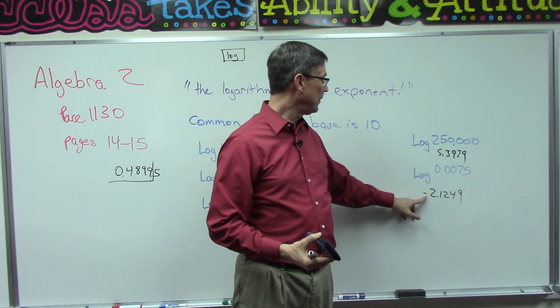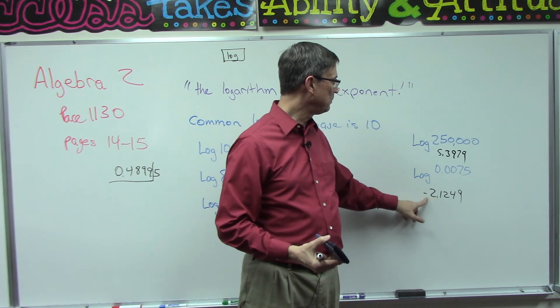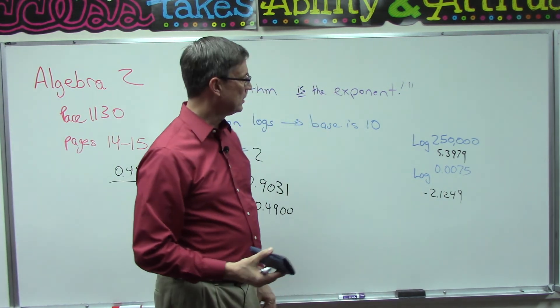And that makes sense because fractions or decimal numbers we're going to end up with a negative exponent. Fractions give us a negative exponent. A decimal number is a fraction, so we would expect a negative number in the front.